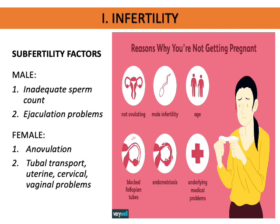Anovulation may be due to Turner syndrome, a congenital chromosomal abnormality, or because of hormonal imbalances, presence of ovarian tumors, exposure to radioactive substances, general ill health, poor diet, or even stress.